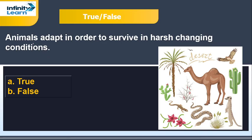The question says animals adapt in order to survive in harsh changing conditions. The statement is given and you need to say whether it is true or false. Animals adapt in order to survive in harsh changing conditions - yes.